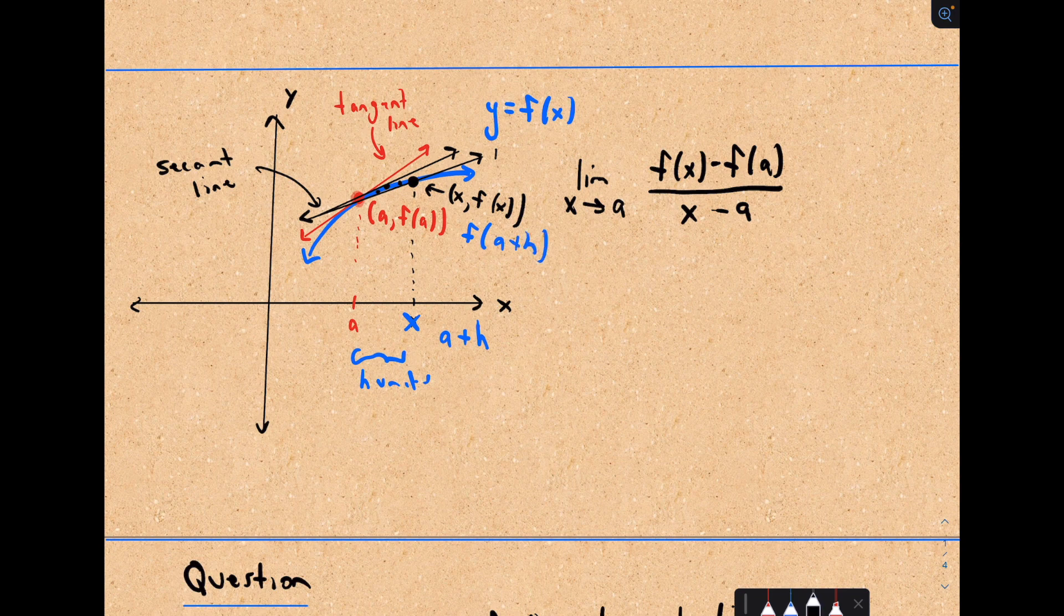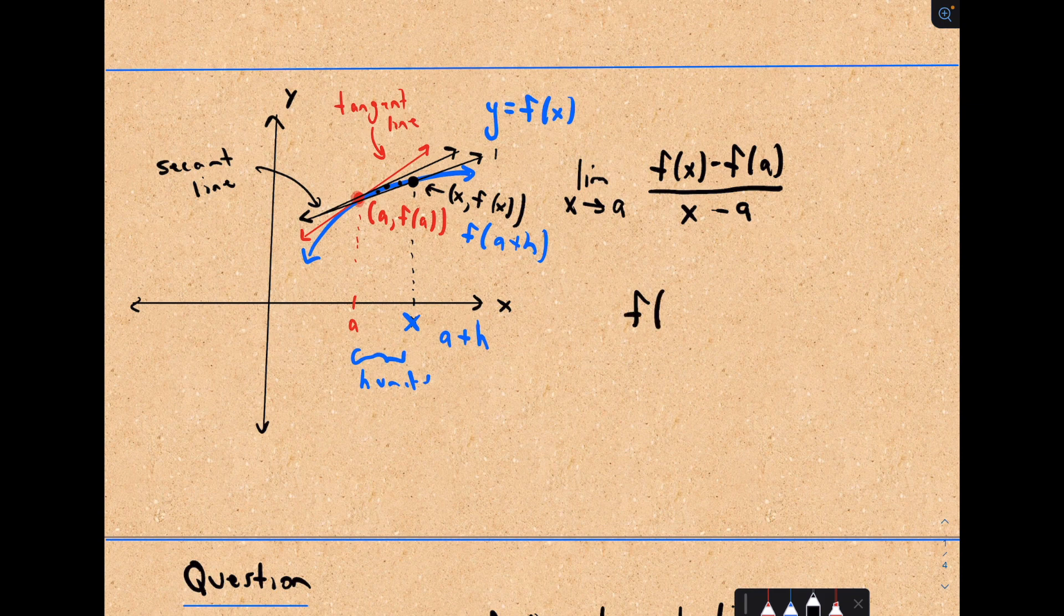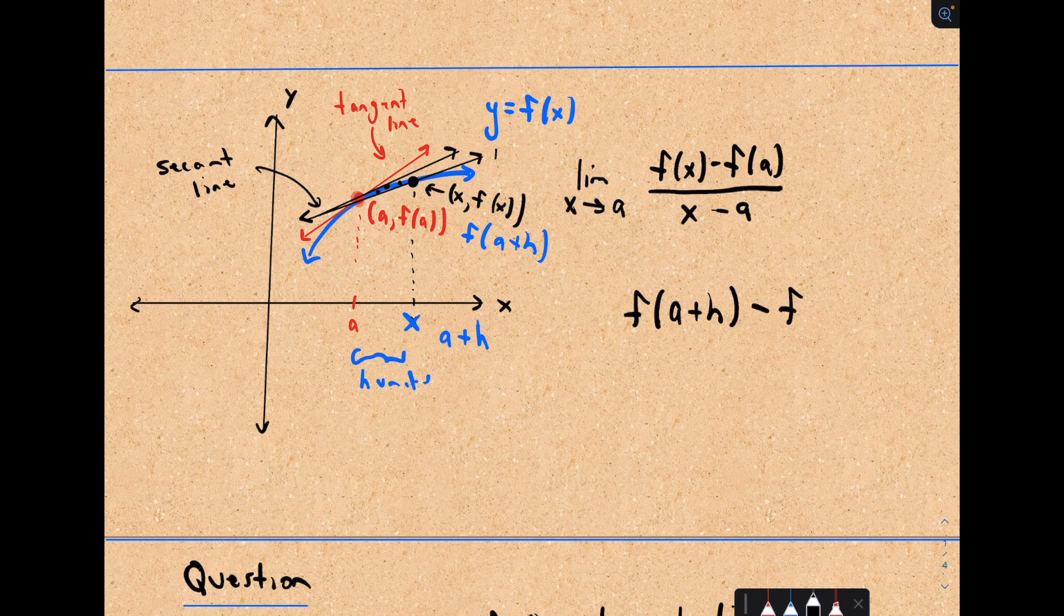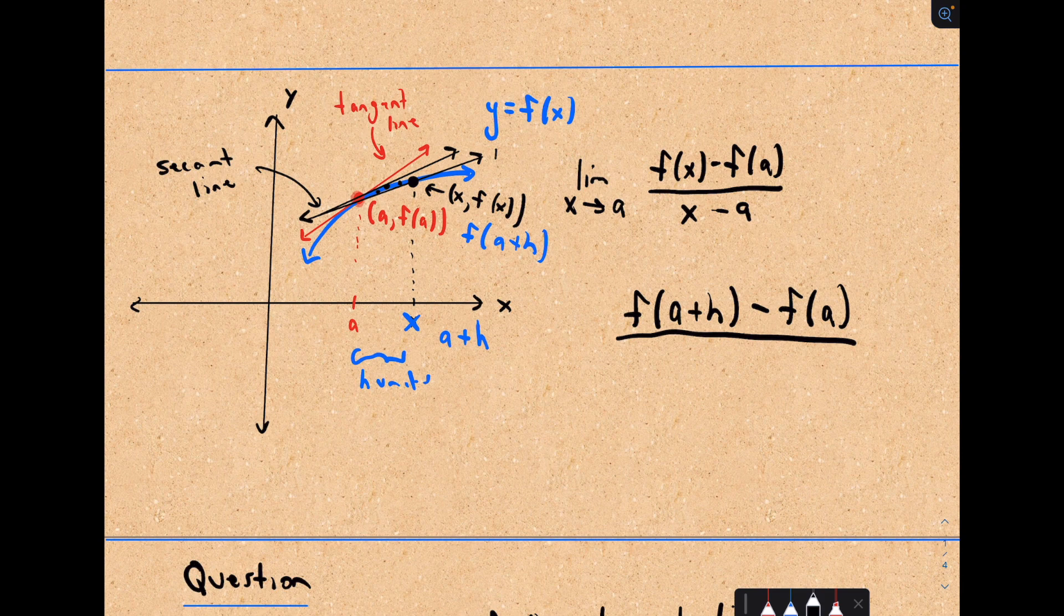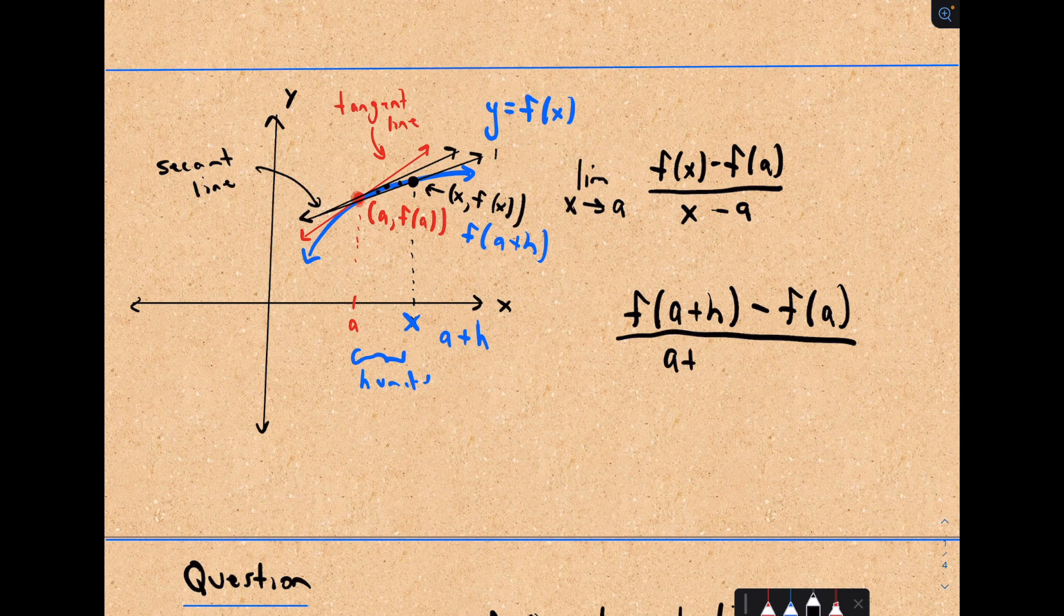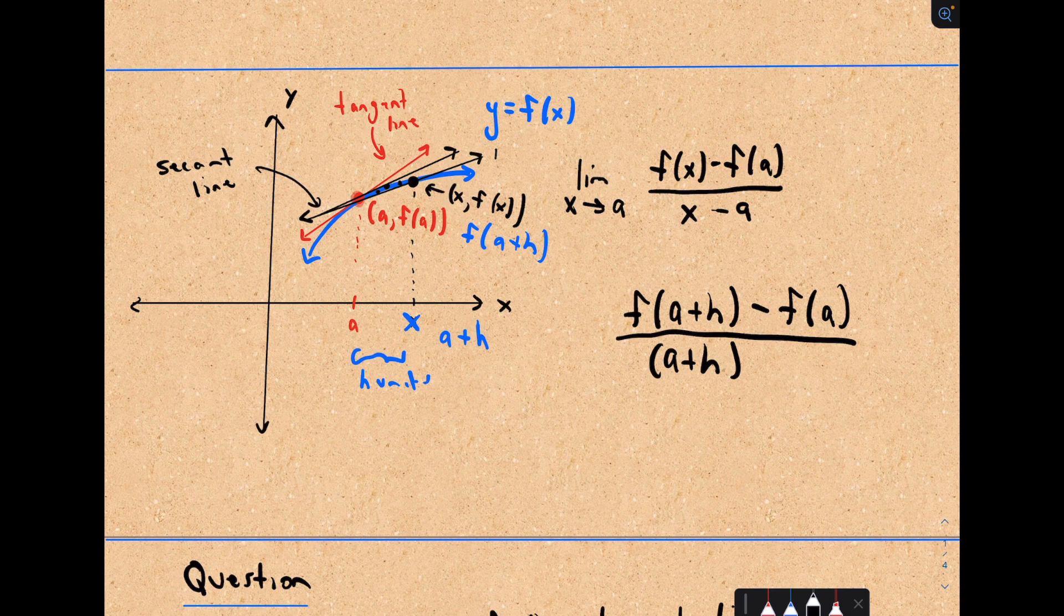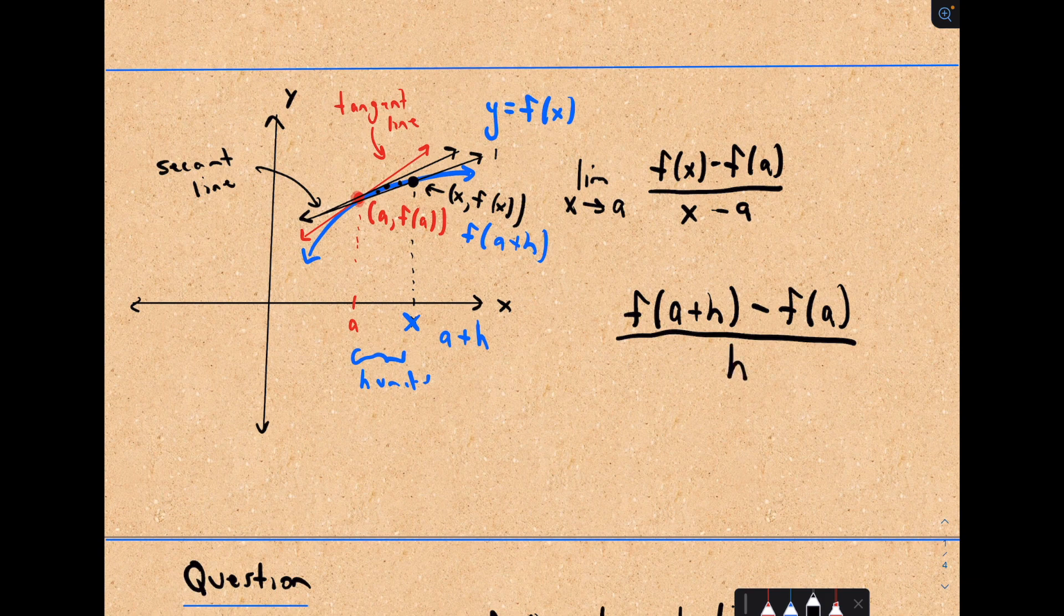So now if I use this definition, my secant line change in y is f of a plus h minus our value f of a. And if I do change in x, notice my x coordinate is now the value a plus h. I would take a plus h, that would be my new x coordinate, and I would subtract away a. But a plus h minus a just leaves you with h in the denominator.